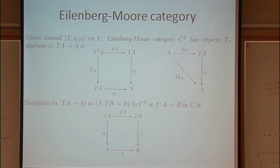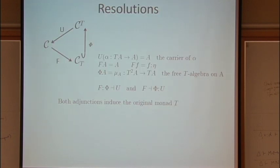So if you take T to be the free monoid functor on sets, for example, then algebras for that are just monoids. I'll explain.